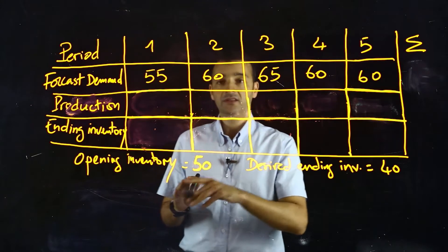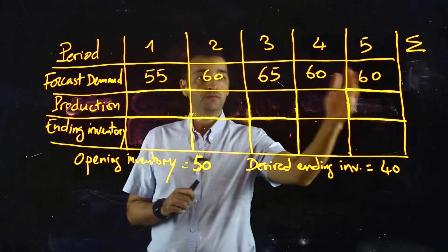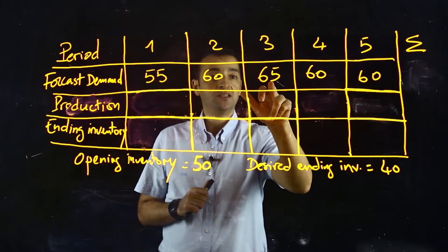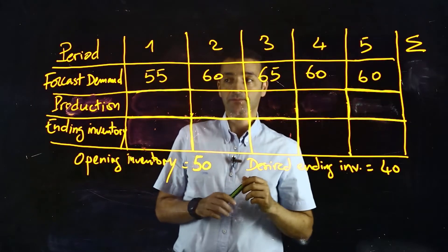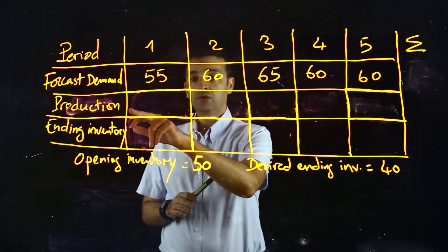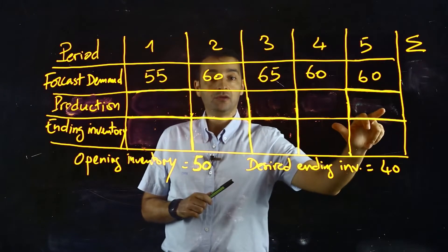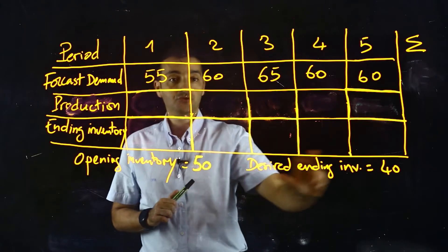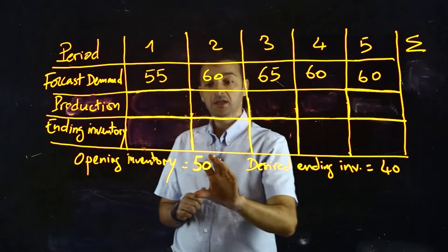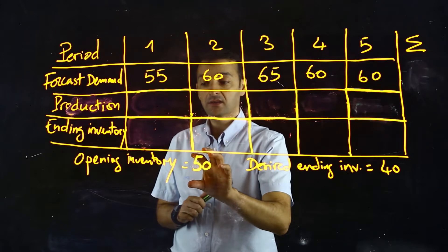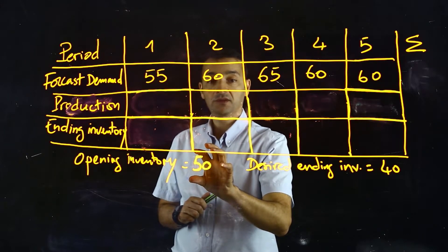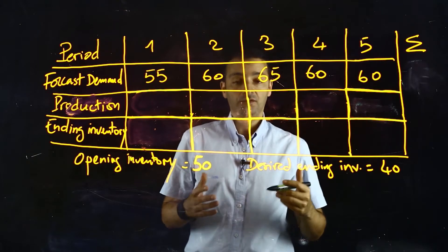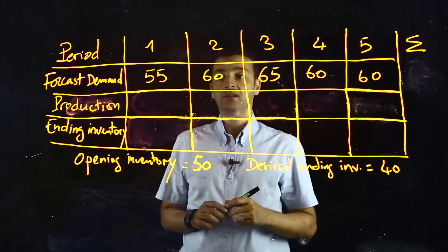In this exercise we have five periods. The forecast demand for period one is 55, 60, 65, 60, and 60. We need to calculate the production rates for all the periods and determine the ending inventory for each period. We already have 50 units in the opening inventory and we desire to get 40 units in the ending inventory.